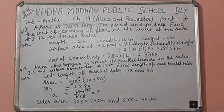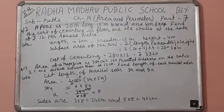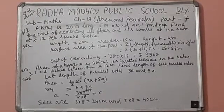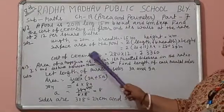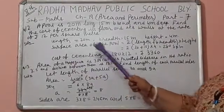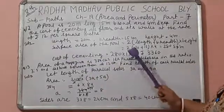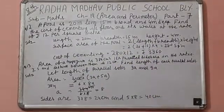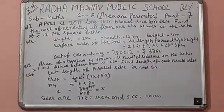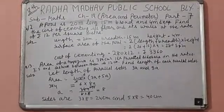Because in a pool, we don't add the area of the room. Now, cost of cementing is at the rate of 12 rupees. That means 280 × 12 equals rupees 3360.